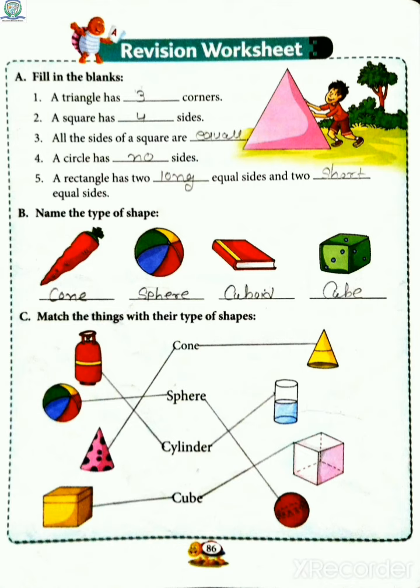Number 3: All the sides of a square are equal. Square ki sabhi sides jo hooti hai equal hooti hai. Number 4: A circle has ___ sides. Circle ki kitne sides hooti hai? Zero, circle ki koi sides nahi hooti.